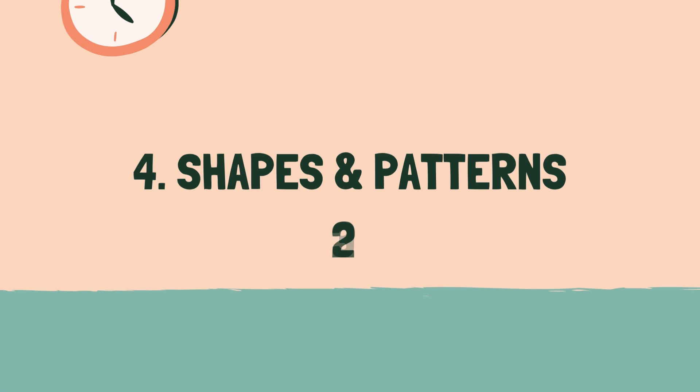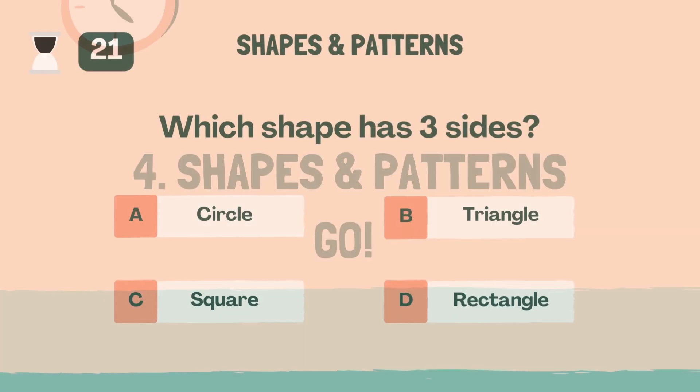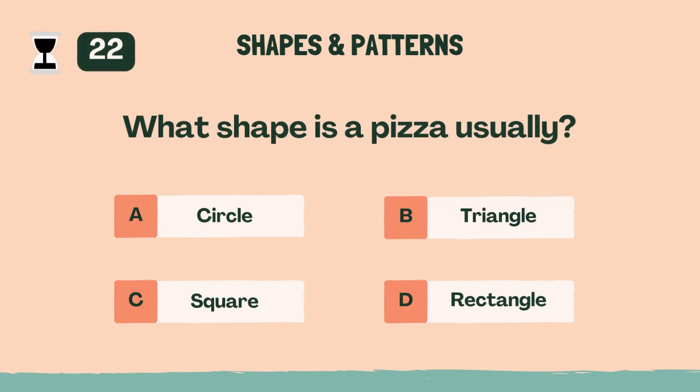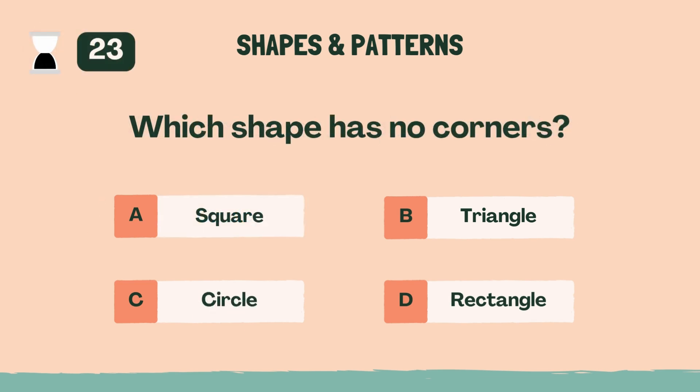3, 2, 1, go. Which shape has 3 sides? B, triangle. What shape is a pizza usually? A, circle. Which shape has no corners? C, circle.